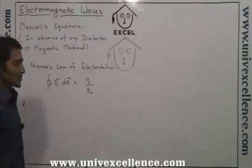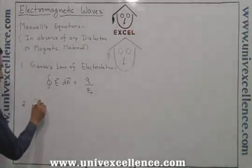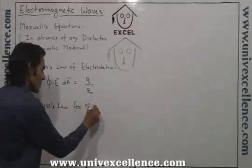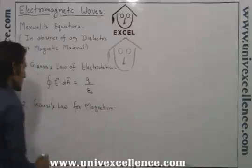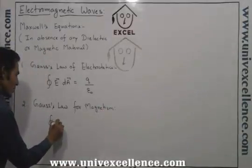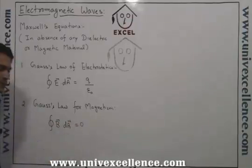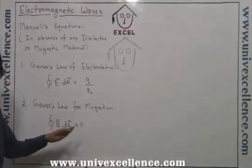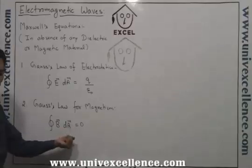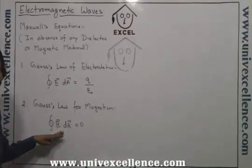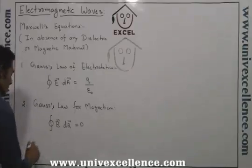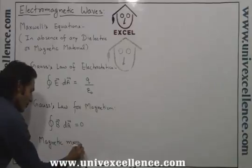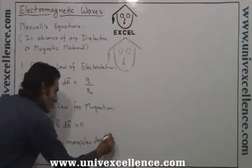The second Maxwell equation is Gauss law for magnetism. According to this, the total magnetic flux through any closed surface is always equal to zero. This means the number of field lines entering a closed volume must equal the number leaving that volume. Magnetic field lines cannot begin or end at a point, meaning isolated magnetic monopoles do not exist.